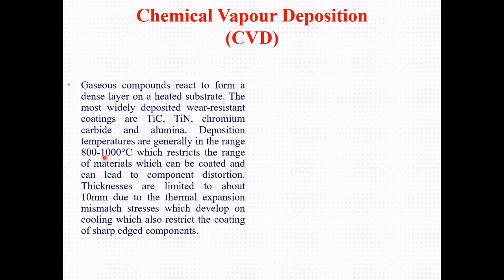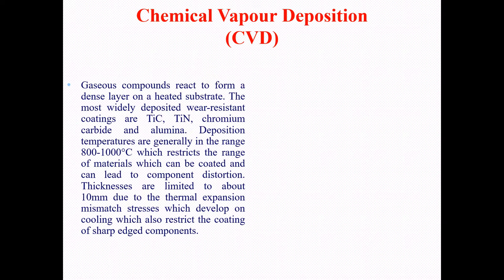Deposition temperatures in CVD are generally in the range of 800 to 1000 degrees centigrade, which restricts the range of materials that can be coated and can lead to component distortion. Thickness is limited to about 10 micrometers due to thermal expansion mismatch stresses that develop on cooling, which also restricts the coating of sharp-edged components.